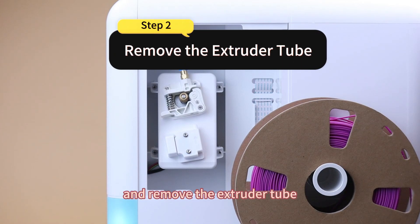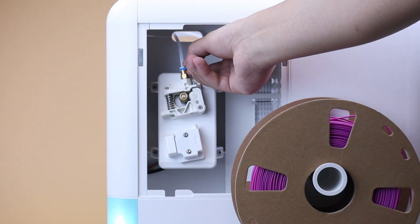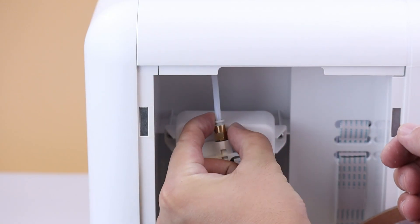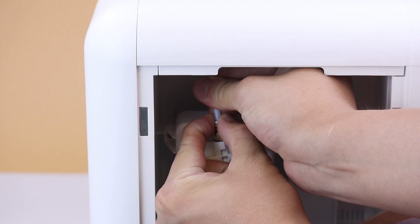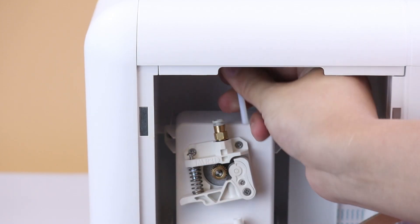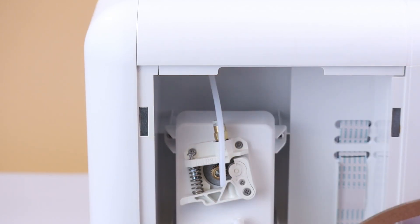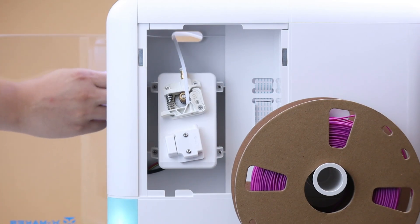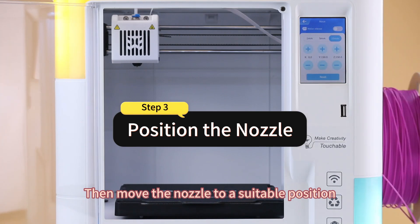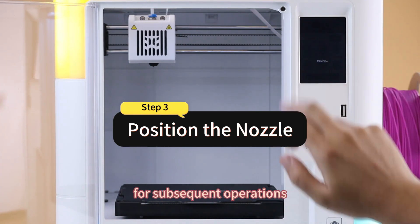Remove the extruder tube. Then move the nozzle to a suitable position for subsequent operations.